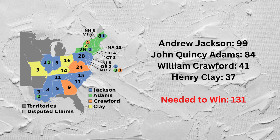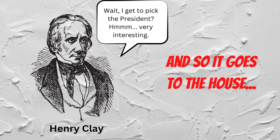Under the Constitution, because there is no clear winner in the Electoral College, it gets kicked to the House of Representatives. Oddly enough, the fourth-place finisher — Henry Clay, who is the Speaker of the House — finds himself in a very unique situation. As Speaker, he's the most powerful person in the House and is in a position to guide someone to a victory. Importantly, he can't pick himself, because the Constitution specifies that only the top two Electoral College winners go to the House for the final selection. That means it comes down to John Quincy Adams and Andrew Jackson, the top two finishers.